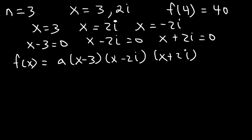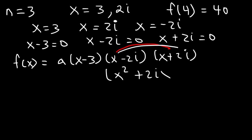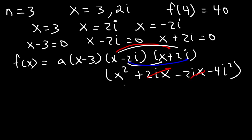The first thing I would FOIL are the imaginary numbers. x times x is x squared, x times 2i is 2ix, and this is negative 2ix. And then negative 2i times 2i is negative 4i squared. So we can cancel 2ix and negative 2ix — they add up to 0. Since i squared is negative 1, negative 4i squared equals negative 4 times negative 1, which is plus 4. So this simplifies to x squared plus 4.